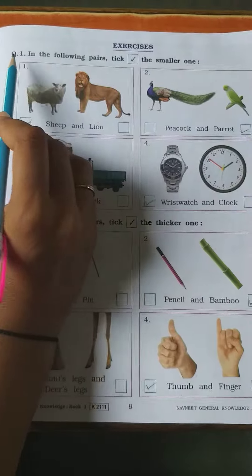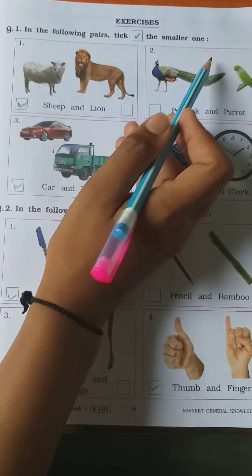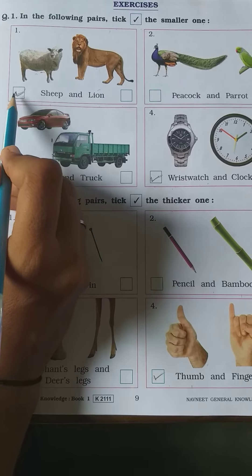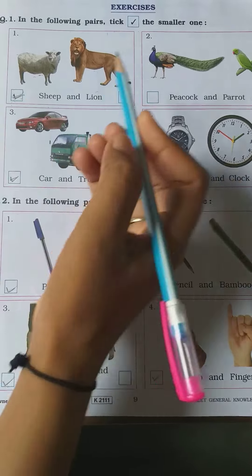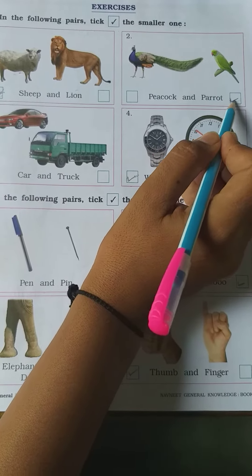Exercise Question Number 1: In the following pairs, tick the smaller one. Sheep and lion. Sheep is smaller, tick in sheep. Peacock and parrot. Parrot is smaller, tick in parrot.